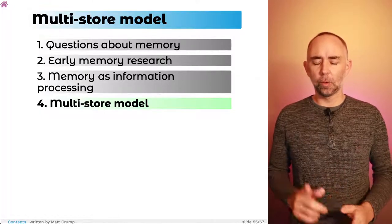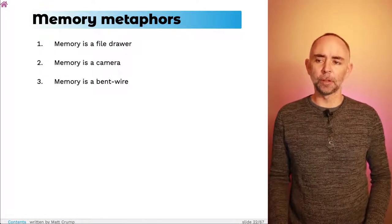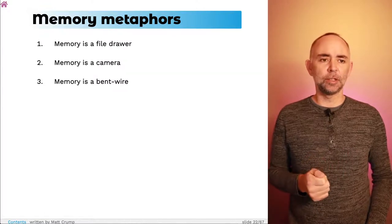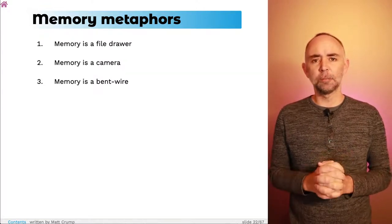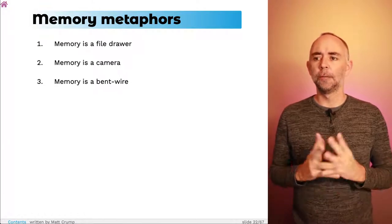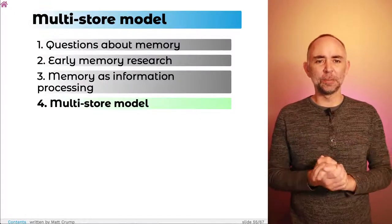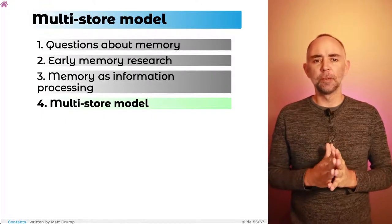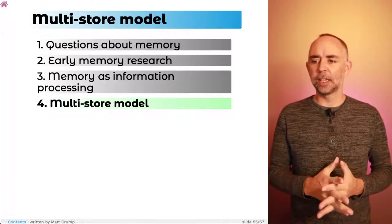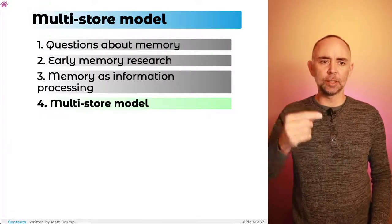Before we do that, let me just quickly go back to a slide we saw before — memory metaphors, from the first part. When we look at the multi-store model, one way to think about it: it is a theory suggesting that memory operates very similarly to the way a computer operates. So it's using a computer hardware metaphor for memory processes. This also connects to our previous discussion where we're thinking about memory in terms of an information processing system — a system of stages, somewhat like the stages in computer hardware.